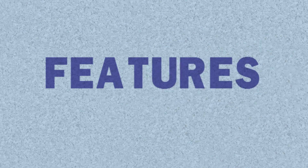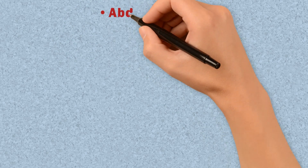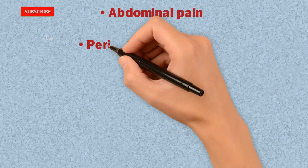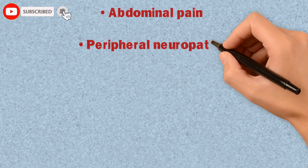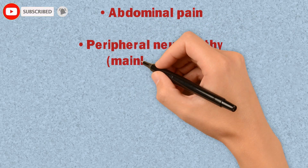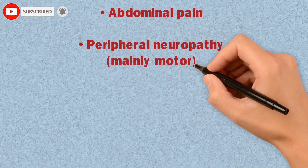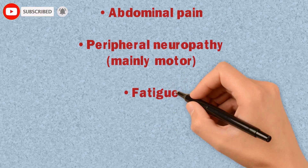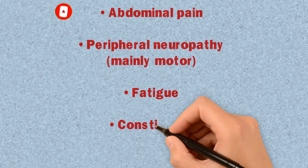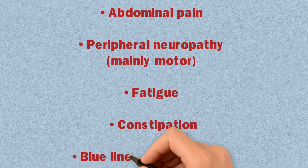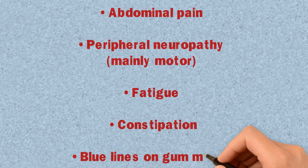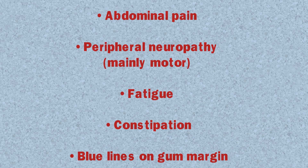The features of lead poisoning include abdominal pain, peripheral neuropathy (mainly motor), fatigue, constipation, and blue lines on the gum margin.